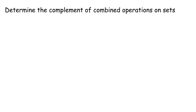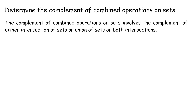Determine the complement of combined operations on sets. The complement of combined operations on sets involves the complement of either intersection of sets, or union of sets, or both intersections. The complement of combined operations on sets is solved from left to right. If there are operations in brackets, the operations in brackets must be carried out first.